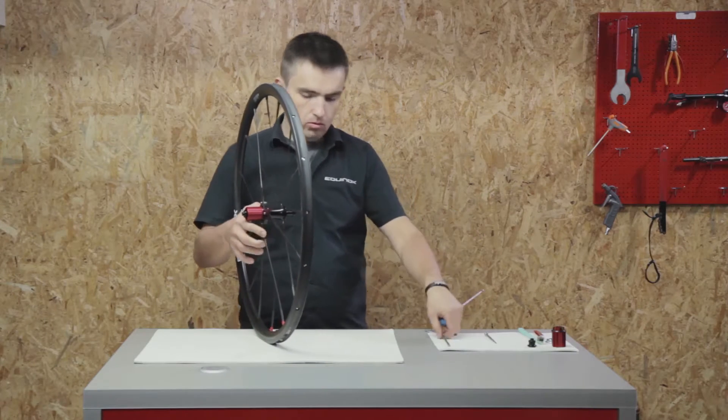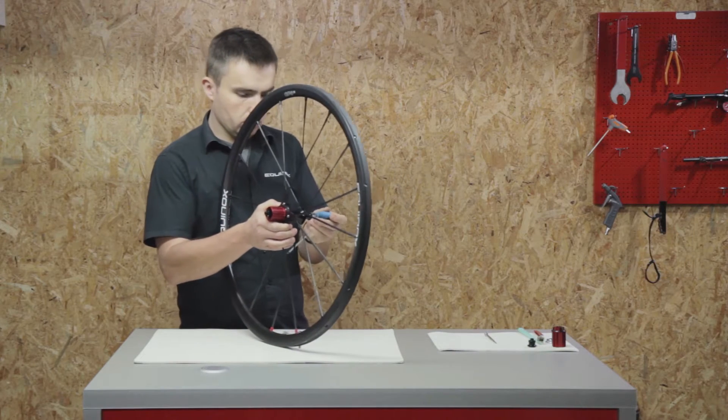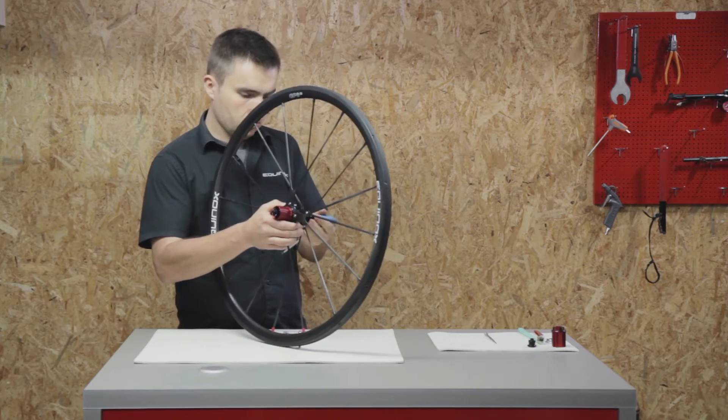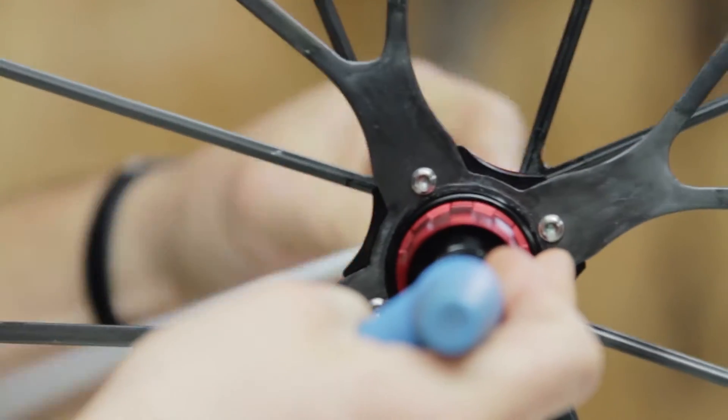We will show you how to disassemble and clean the cassette body. Open side nut with hexagonal key.